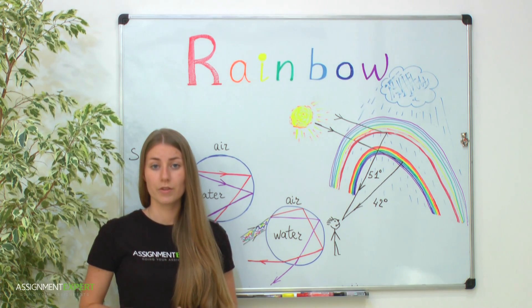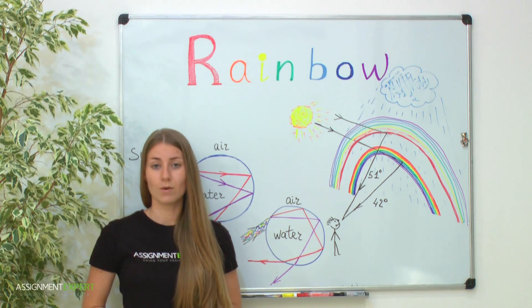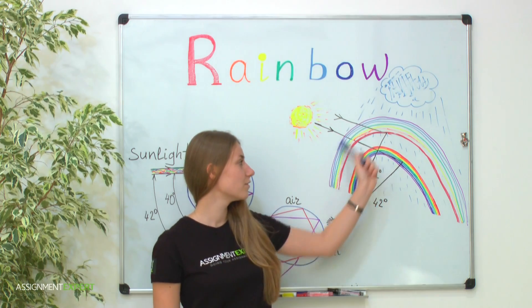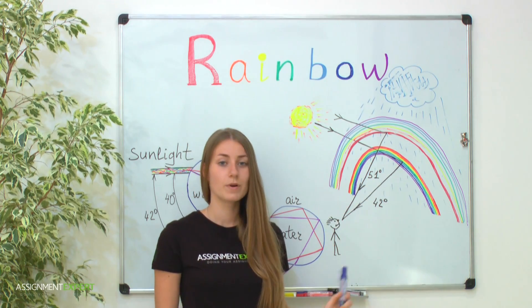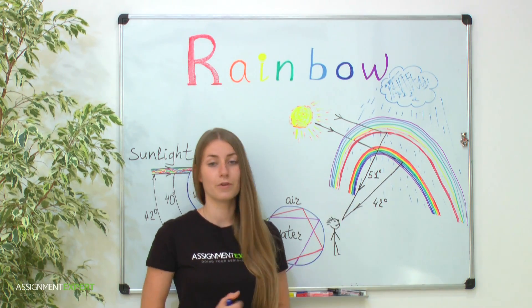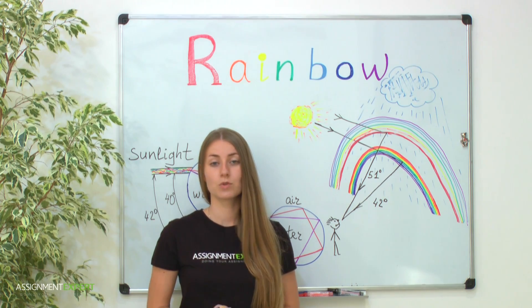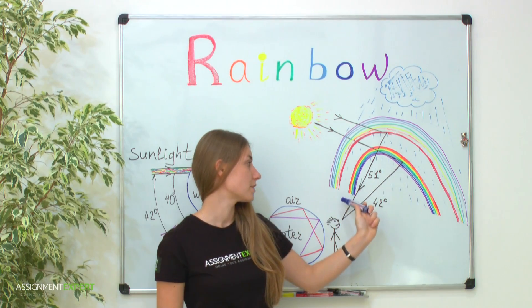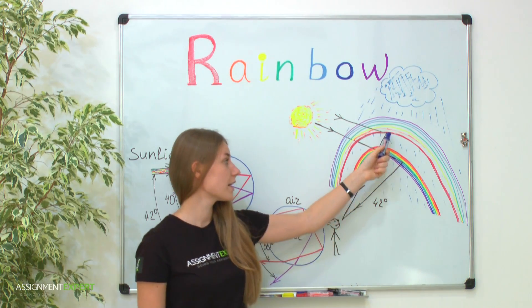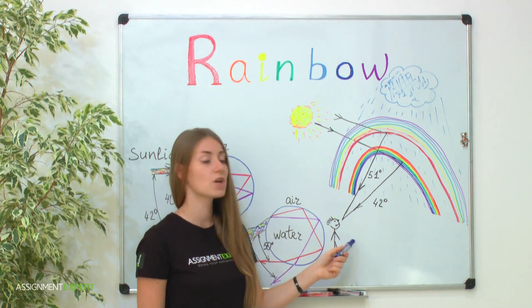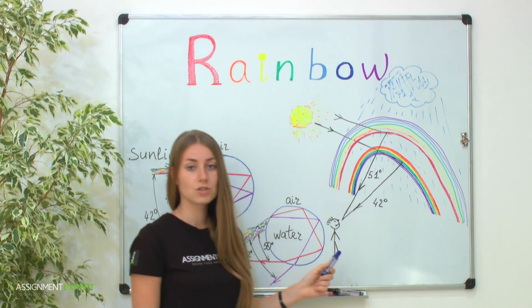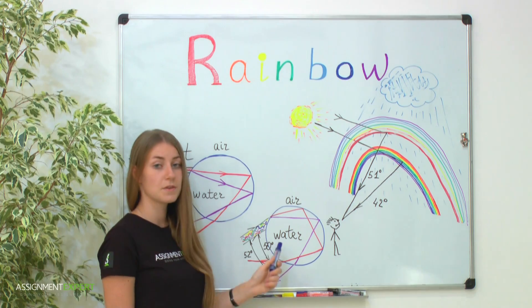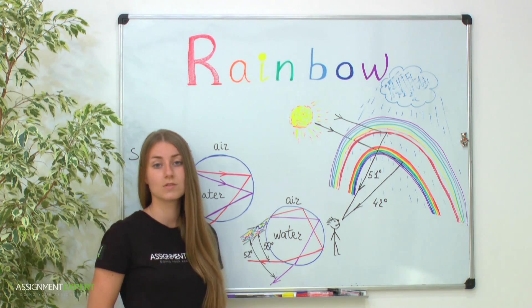In principle we can even see the third and fourth rainbow and so on. Interestingly, the colors in the secondary bow are reversed. Moreover, it is twice wider than the first one. The raindrops which create the secondary bow are situated higher than in the first case — only in this case can the secondary reflected rays reach our eyes. Calculations show that the secondary reflected rays meet at angles of 50 to 52 degrees to the incident ray.